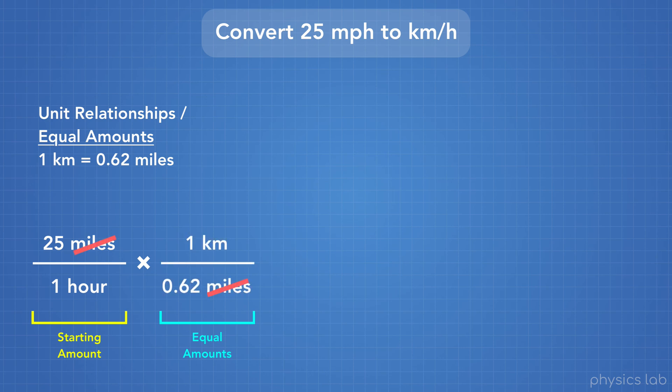Now, we can cross out miles, since it's on the top and the bottom. What we're left with is kilometers on the top and hours on the bottom, which is the unit we want, kilometers per hour.